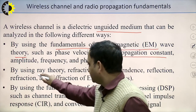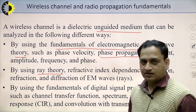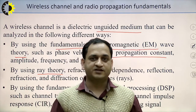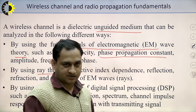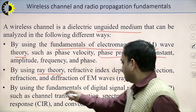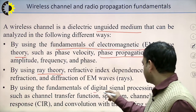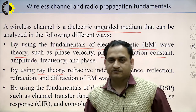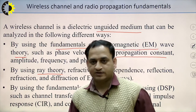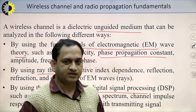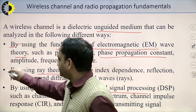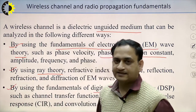The second is the ray theory, in which the refractive index dependency, refraction, or diffraction of the EM wave can be analyzed. The third way the wireless channel can be realized is through DSP — digital signal processing — where we can discuss channel transfer functions, spectrum, channel inputs, impulse response, convolution, and transmitting signals. These three are the basic ways through which we can analyze the wireless channel.